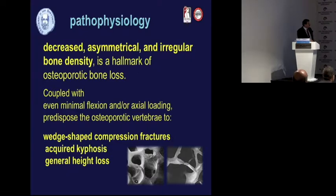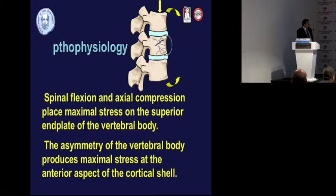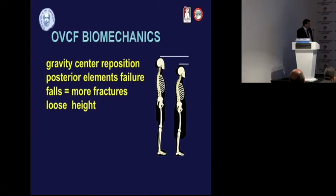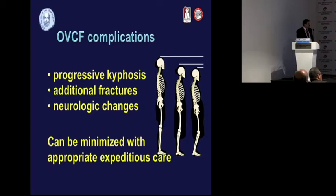Decreased, asymmetrical, and irregular bone density is the hallmark of osteoporotic bones and may cause wedge-shaped compression fractures, acquired kyphosis, and general height loss. When we have axial load, bending of the vertebrae begins, leading to breakouts, gravity center repositioning, posterior element failure, patient falls, and more fractures.